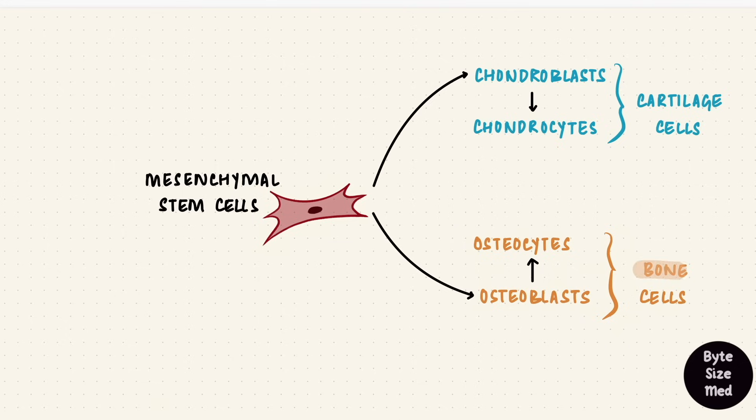To understand ossification, we need to go back a little to some things about cartilage and bone. Cartilage can be of three kinds: hyaline, elastic, and fibrocartilage. Here we need hyaline cartilage. It has cells in an extracellular matrix.